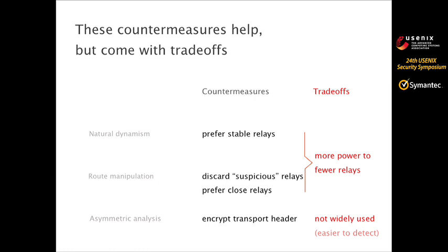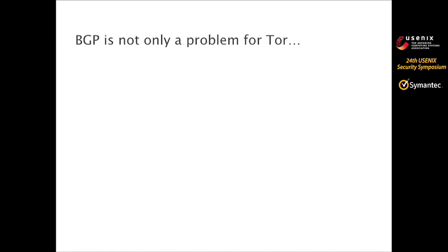However, these countermeasures might help, but they also come with tradeoffs. The first two countermeasures put more trust in a smaller number of relays, giving more power to fewer relays, which could be potentially dangerous. And the last one — encrypting TCP headers — is not widely used because of its high cost, so using it would make traffic easy to detect.